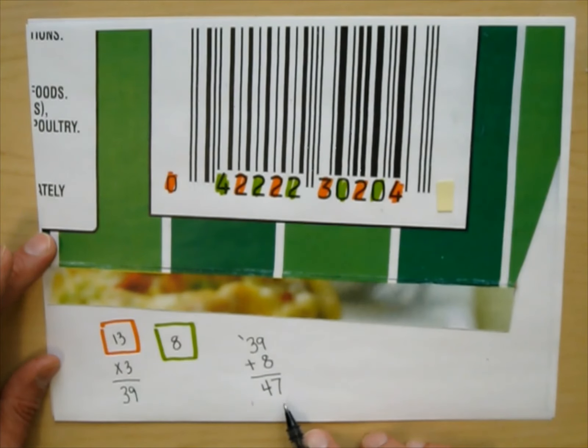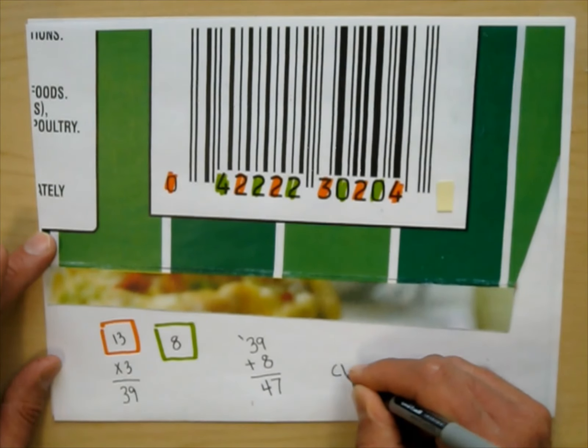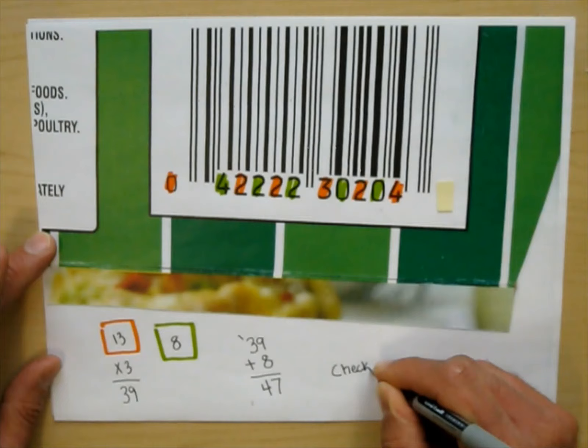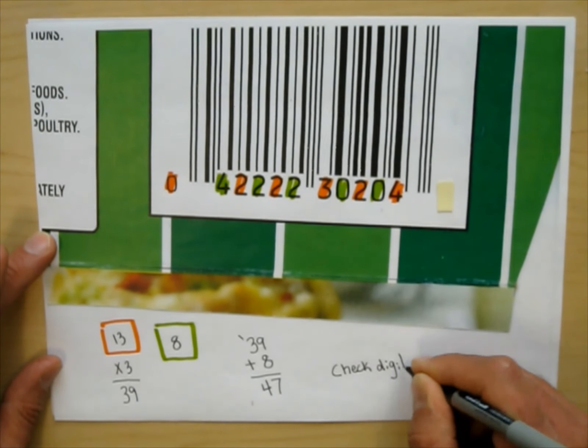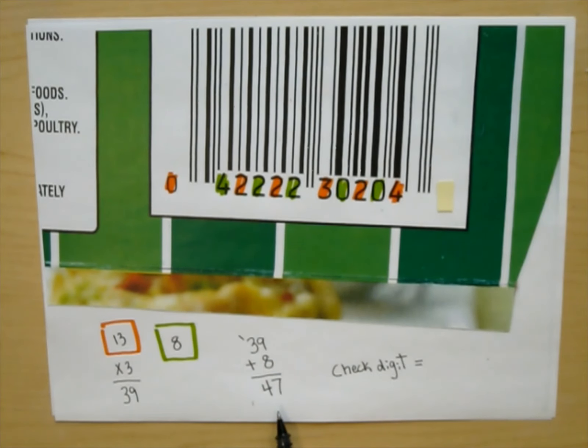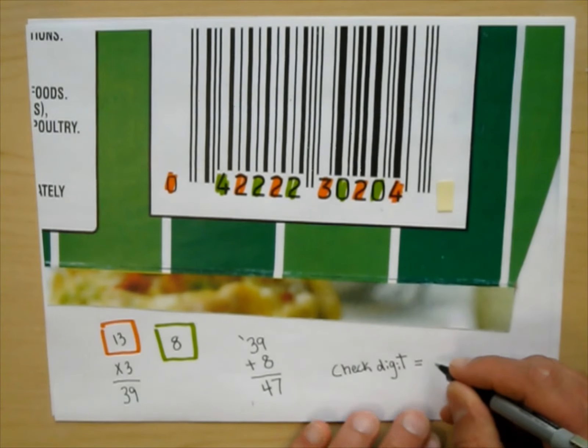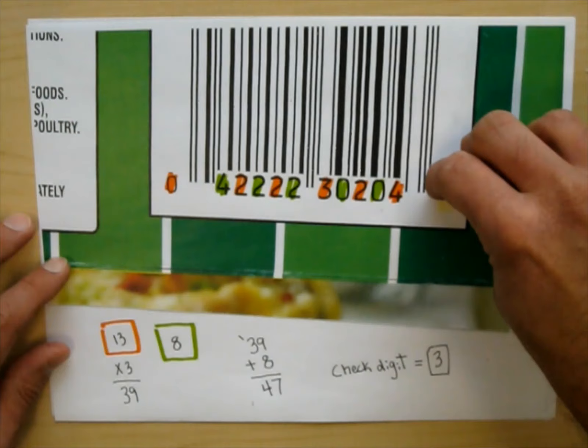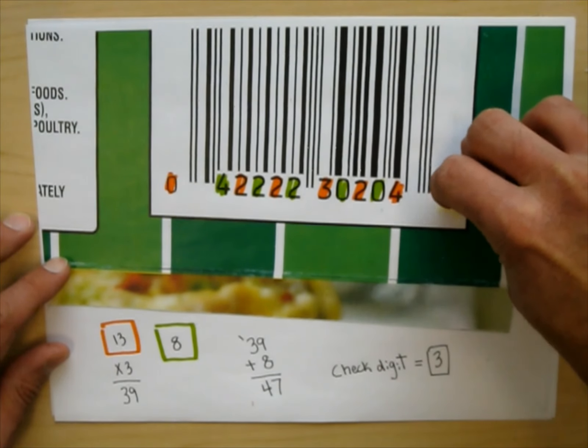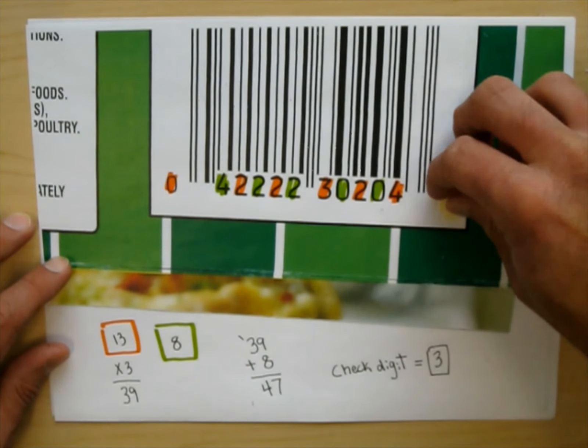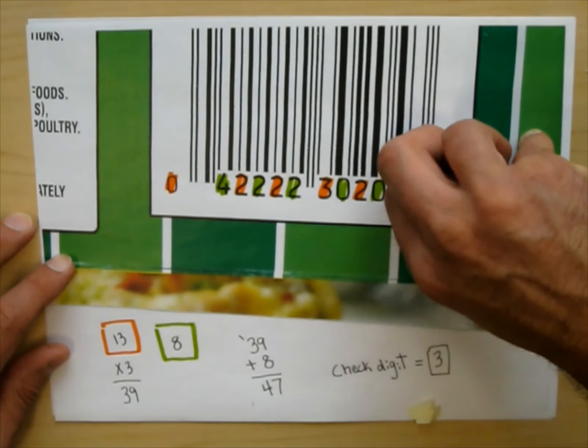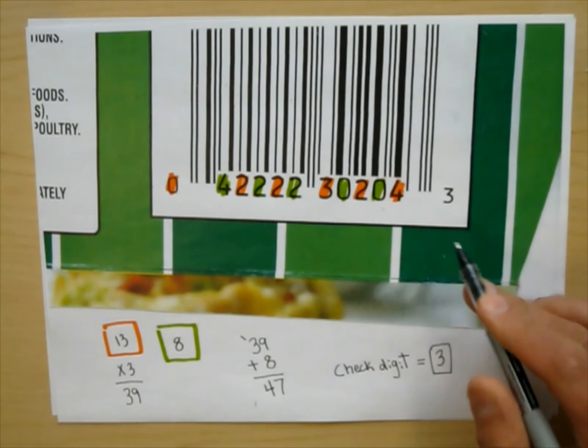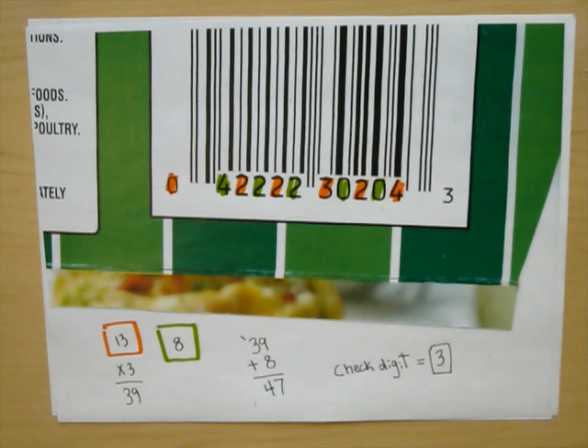So the check digit in this example should be what number? Well, it needs to add up to a multiple of 10. Our next multiple of 10 is 50. So it should be 3. So will it be? Can I even take these? These are like sticky notes. Ah, come on. I think I put 3 of them on because you can see through just one of them. And there it is. Woo-hoo!